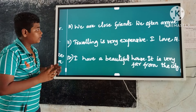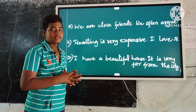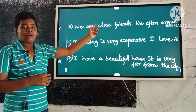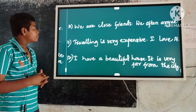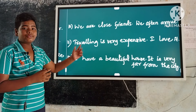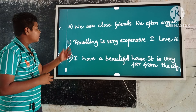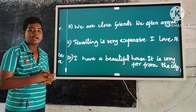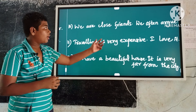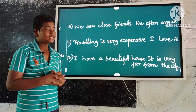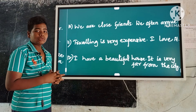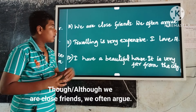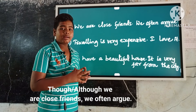Example number ten: We are close friends. We often argue. These are contrast ideas. Here the first occurring sentence is 'we are close friends.' Keep though or although before it, and a comma before the second sentence. So the answer is: Though or although we are close friends, we often argue.